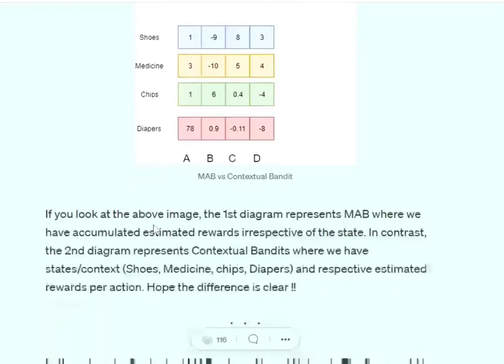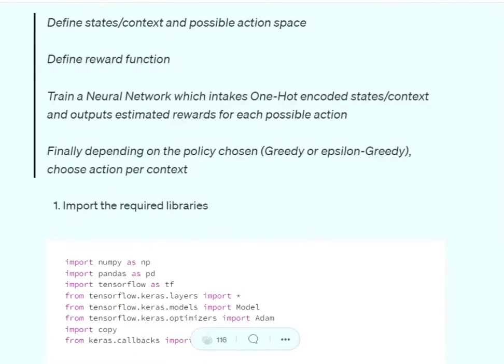They would be integer values we're setting up now, represented by integers 0, 1, 2, 3 in this dummy example. Finally, depending upon the policy chosen, greedy or epsilon-greedy, we'll choose an action. Let's get started.